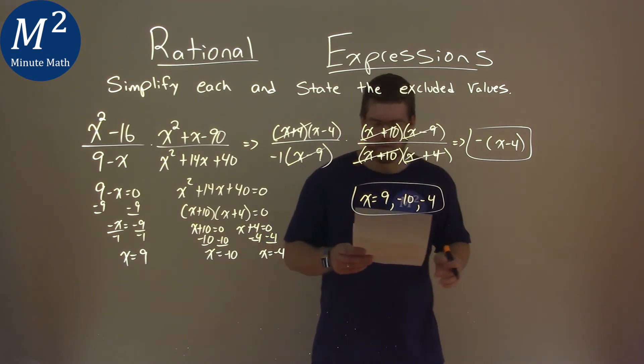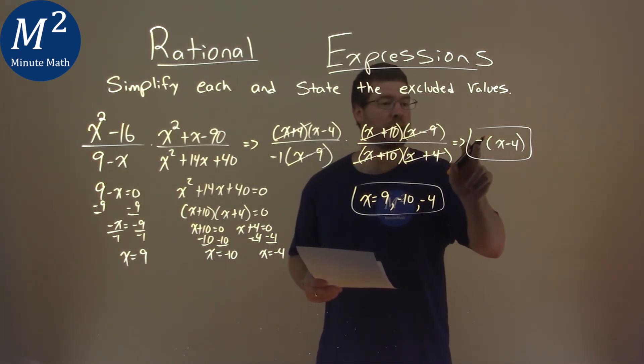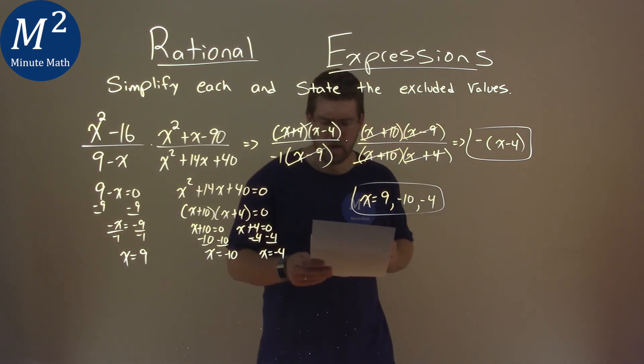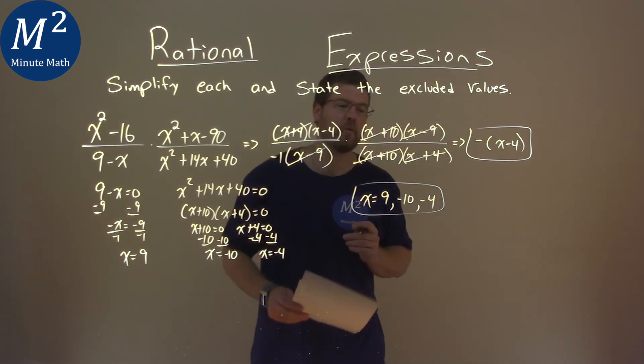And so again, our final answer here, simplified, is negative in parentheses x minus 4. And the excluded values are 9, negative 10, and negative 4.